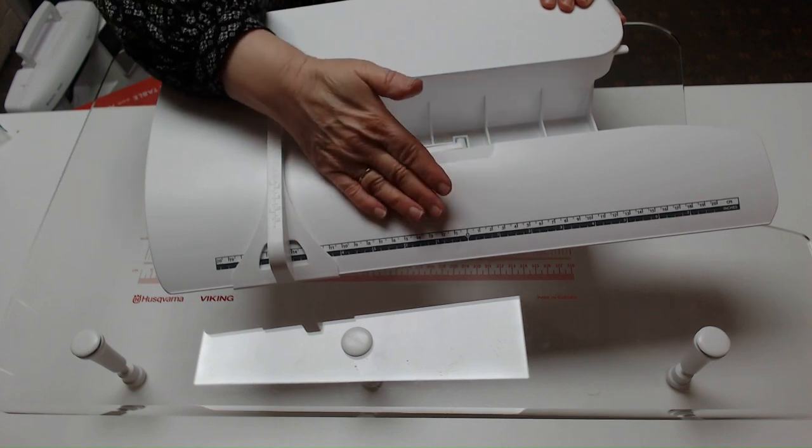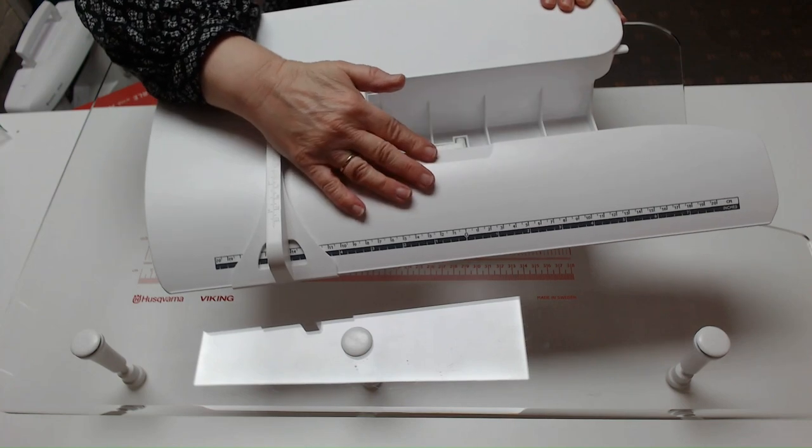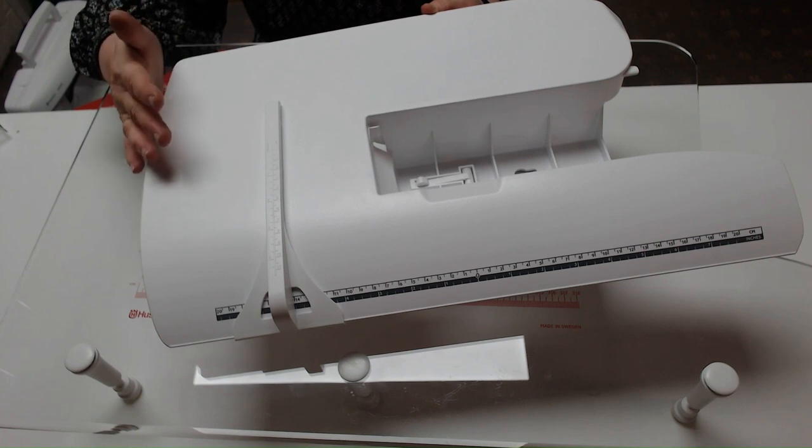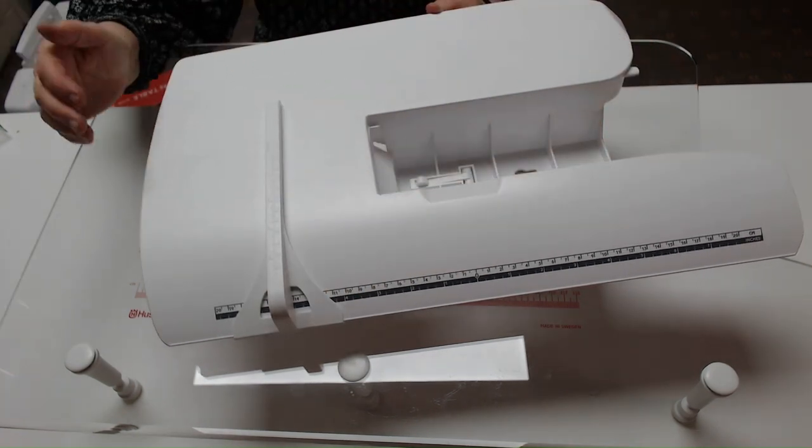You've also got a cutout here to allow you to get to your bobbin. So if you're doing something like free machine embroidery and you want to change your bobbin, you've got easy access to it. The size of the white table is 12 by 20 inches.